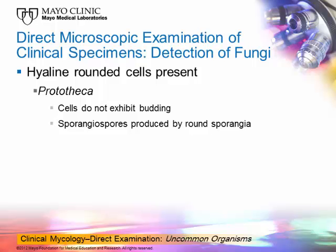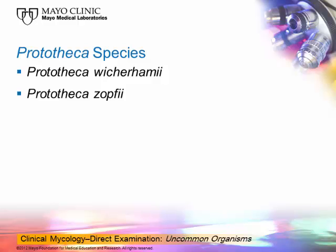The next slide shows an organism that is not actually a fungus — it is an achlorophyllic alga called Prototheca — but it is seen in the fungus part of the laboratory because it looks like a yeast to people without much experience. Prototheca does not bud at all. It reproduces via sporangia spores produced by round sporangia. Two species are Prototheca wickerhamii and Prototheca zopfii. In culture, you see single cells throughout the field, but also larger cells where a central cell is surrounded by others — that is the sporangium. They look mulberry-like, as textbooks describe. When you see a sporangium with sporangia spores inside, this is likely Prototheca.